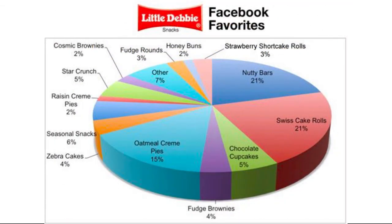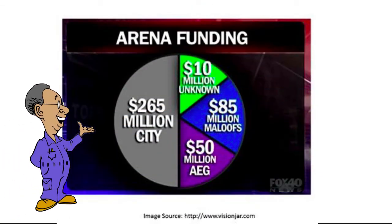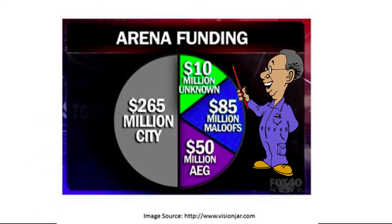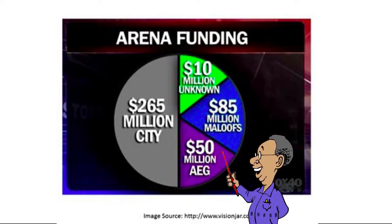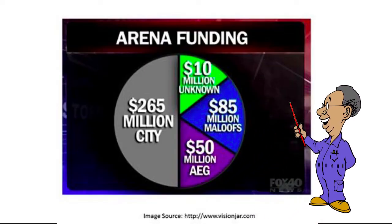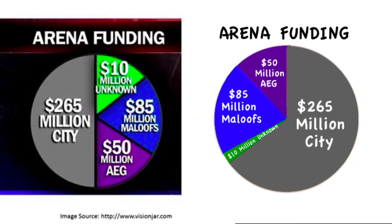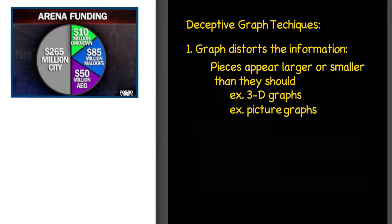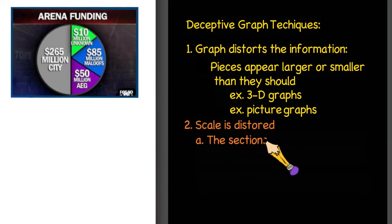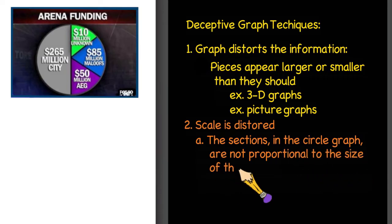We have seen that three-dimensional graphs often distort information, but you have to be wary of regular circle graphs also. In this graph about who's going to pay for the new stadium, it looks like the city is only paying half. But the slices on the right side — $10, $85, and $50 million respectively — are all about the same size, which doesn't make sense. If I add up the numbers on the right side, it only adds up to $145 million. By reorganizing this to scale, I realize the city is actually paying for 65% of the total cost. The scale is distorted since the sections in the circle graph are not proportional to the size of the wedges.